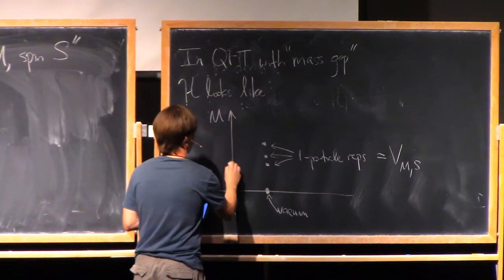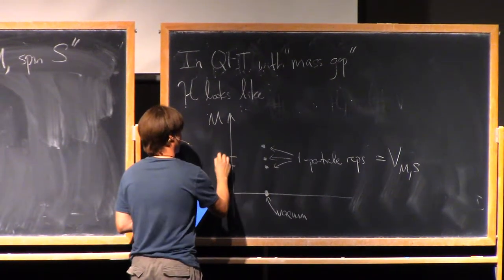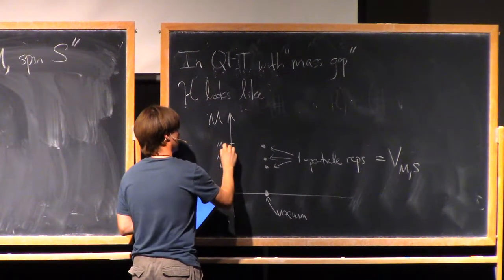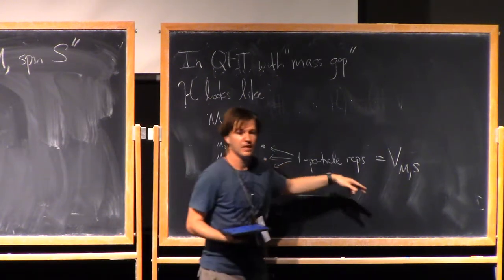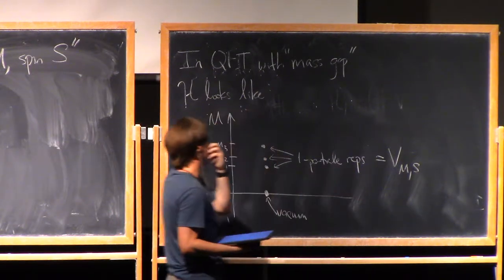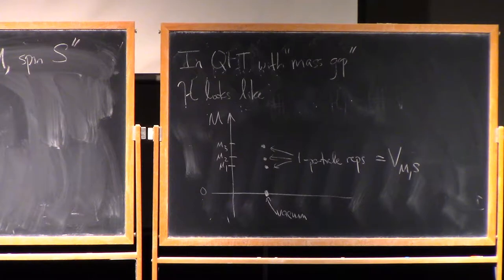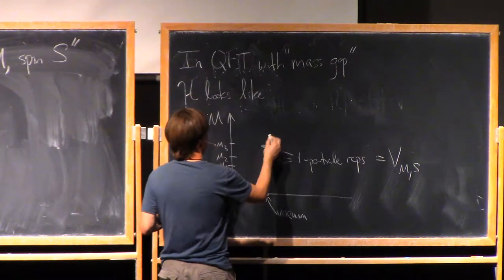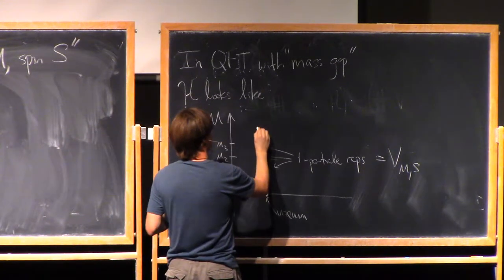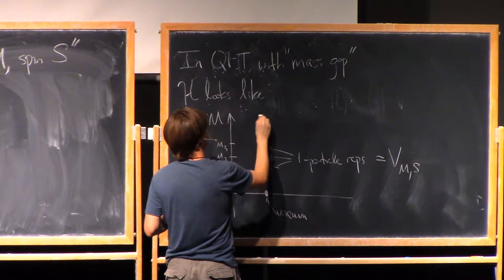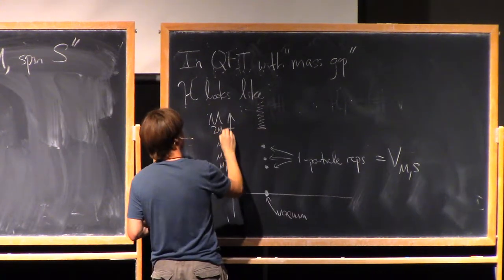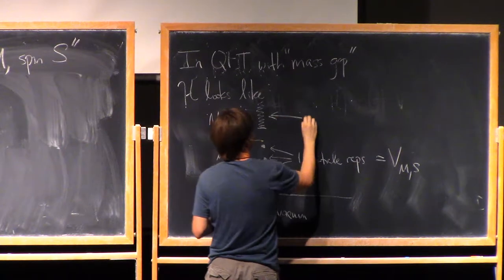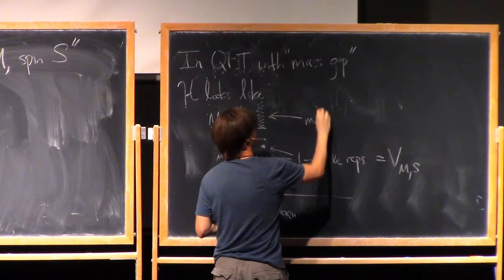There's one particle with mass M1, one particle with mass M2, one particle with mass M3 — all with different spins, given by these representations S. And then at some point there's going to set in a continuum starting at 2M1, and this part comes from the multi-particle states.